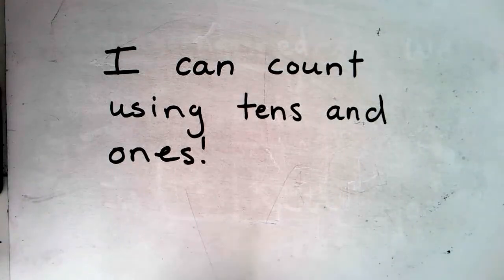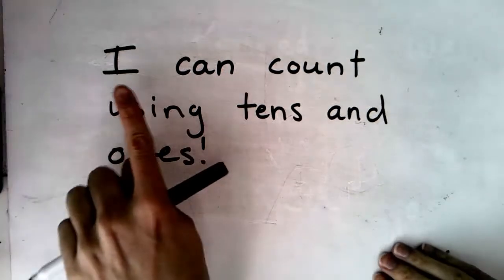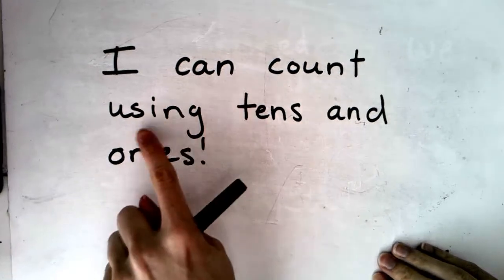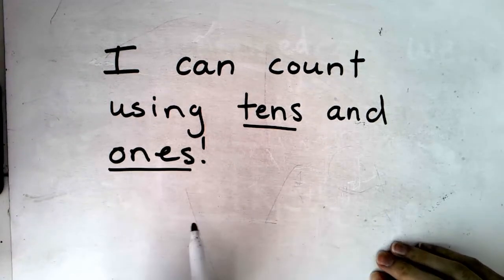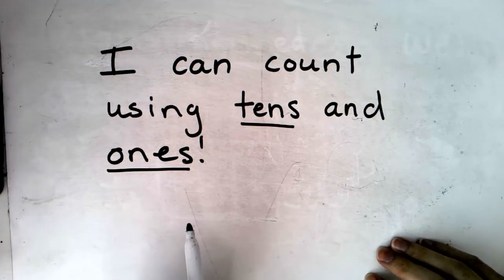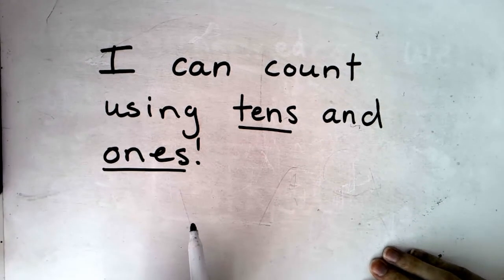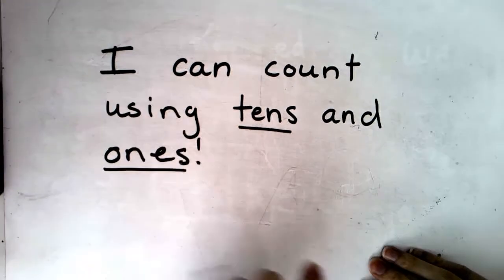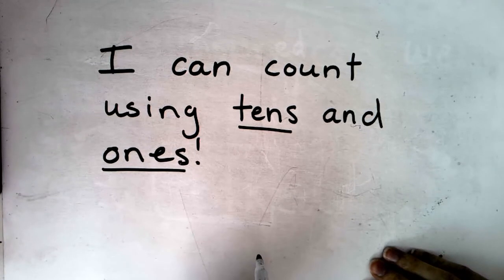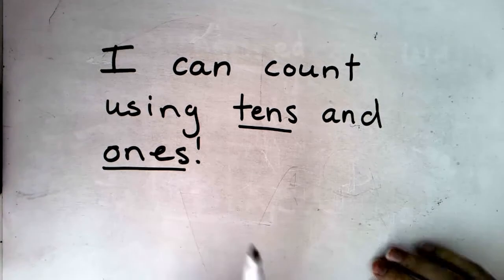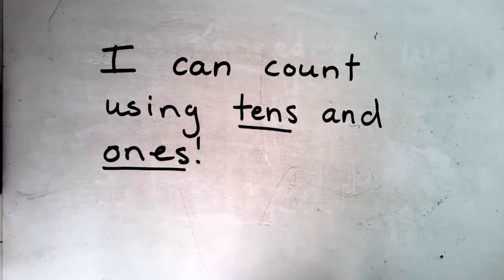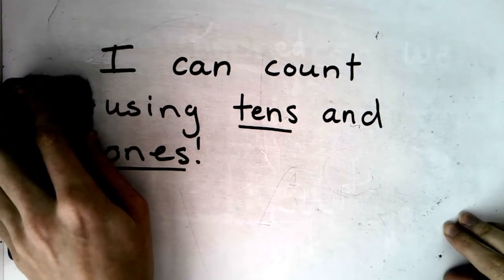Let's get started with our I Can statement today. What we want to be able to do by the end of today is: I can count using tens and ones. These two words — tens and ones — may not sound super familiar to you, but as we practice more and more, those are two words you'll hear all the time in math. We're also going to be using some number bonds today, which is why you needed your dry erase marker.